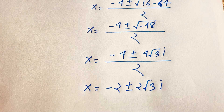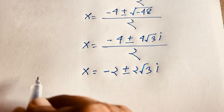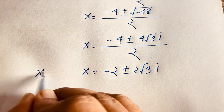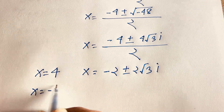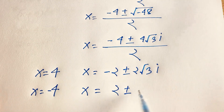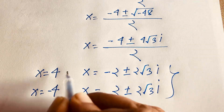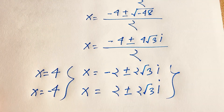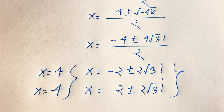Our final answers are: x equals 4, x equals negative 4, x equals 2 plus or minus 2 root 3 i, and x equals negative 2 plus or minus 2 root 3 i. This gives us all 6 roots. That is our final answer to this math Olympiad question. Thank you all — if you enjoyed this video, please subscribe to my channel for other interesting videos. Goodbye, take care.